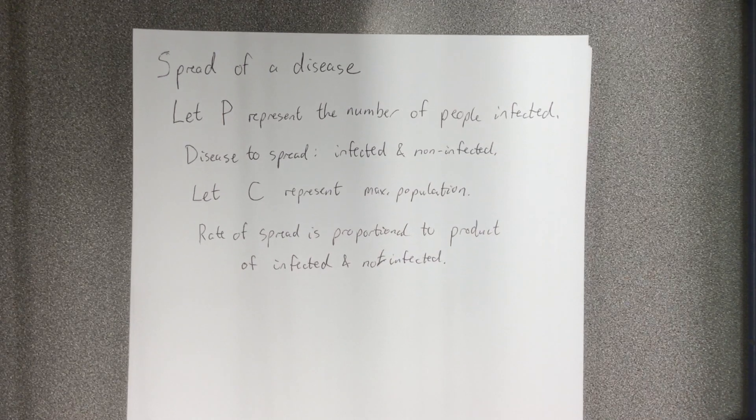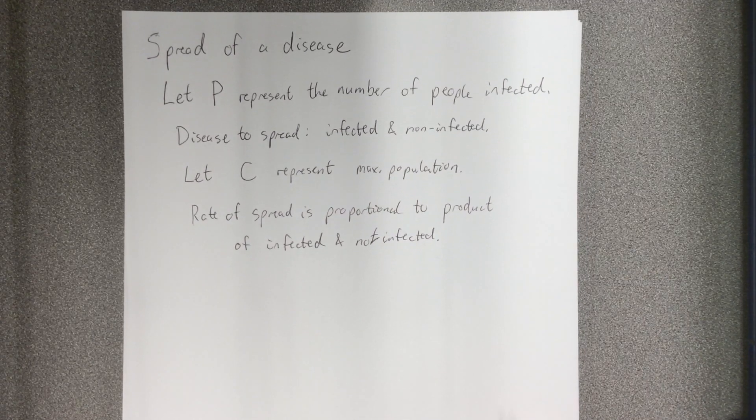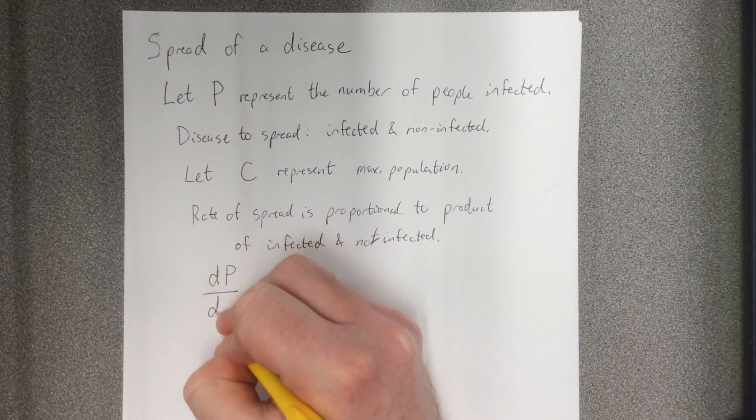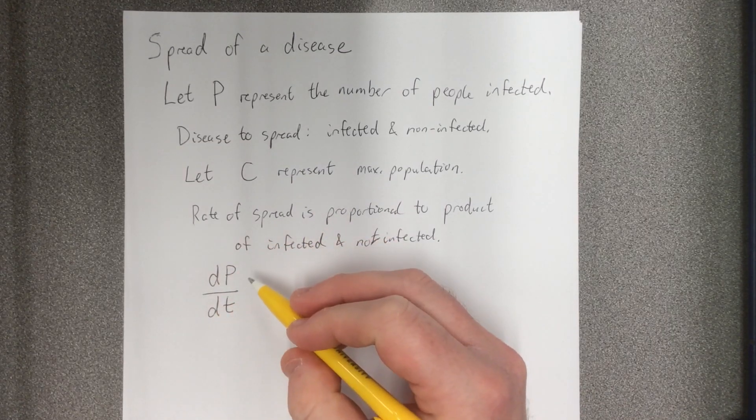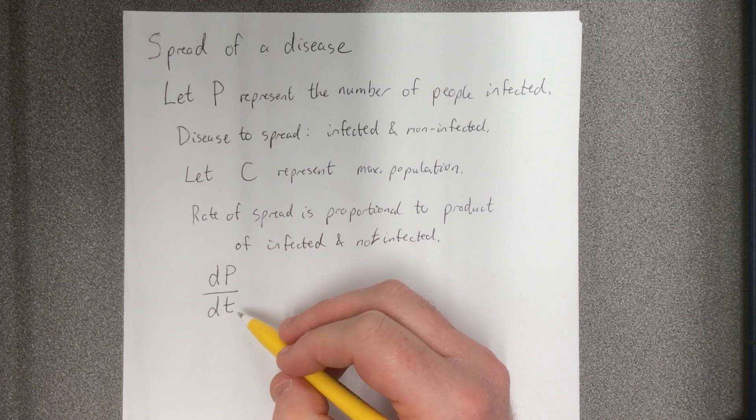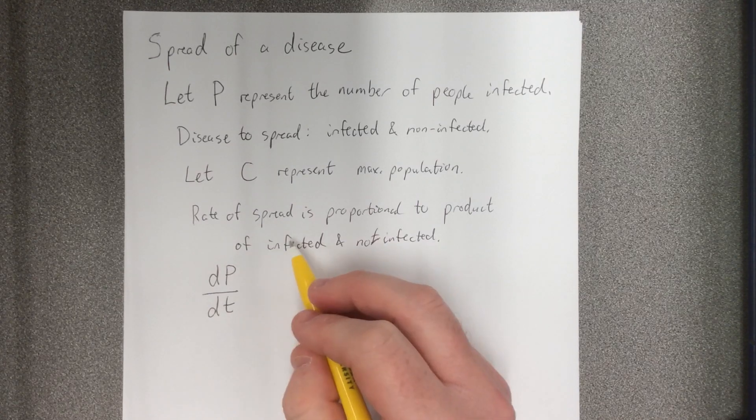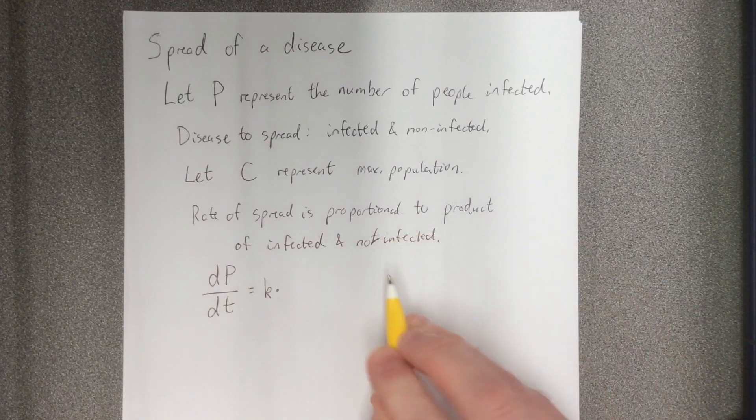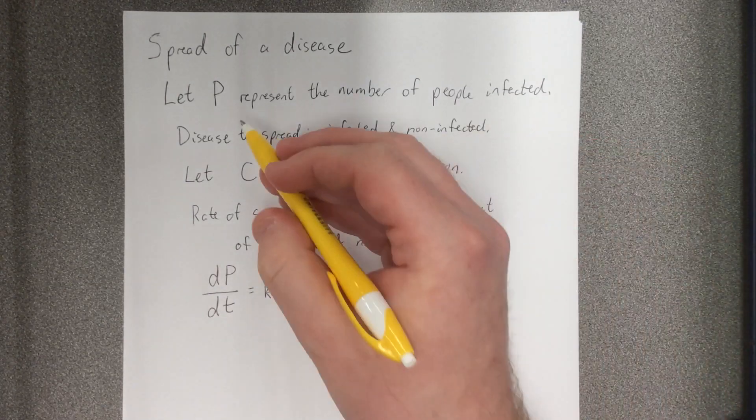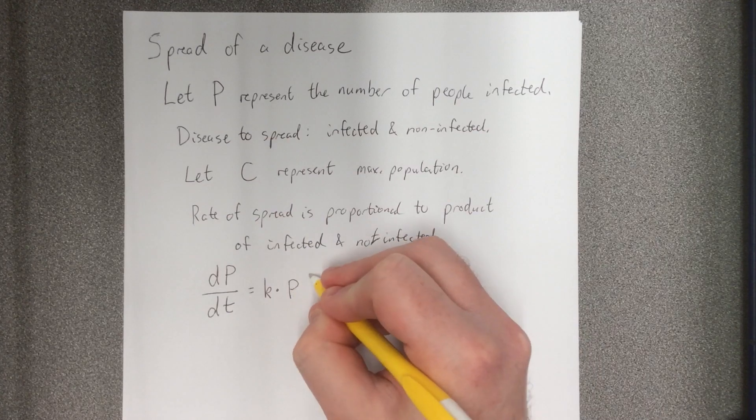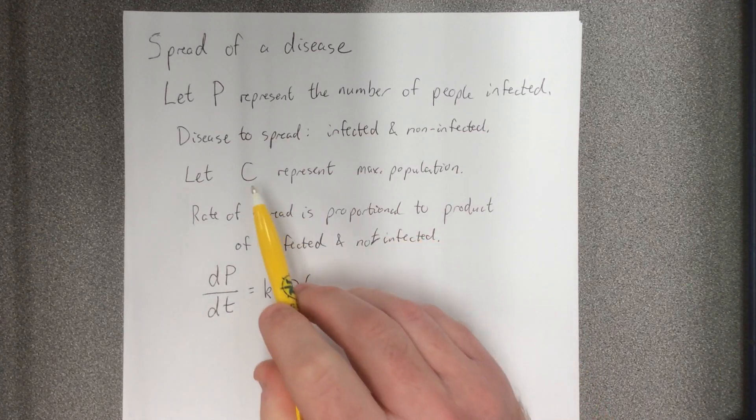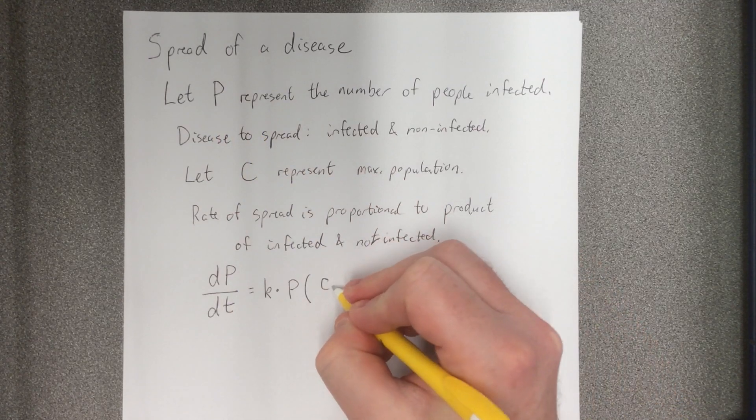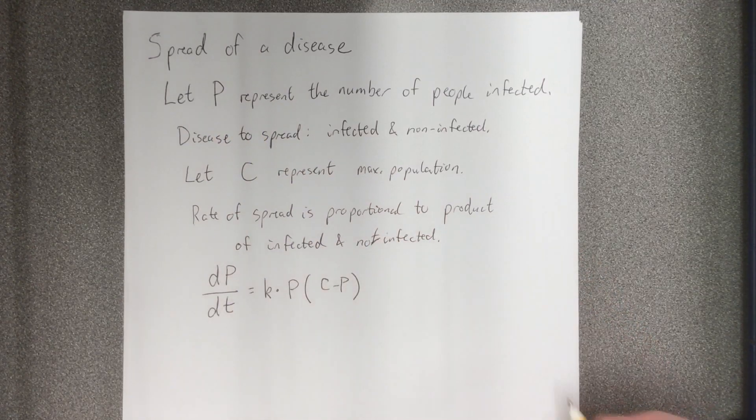Now I realize not everybody who watches this video is going to be up on calculus, but I did want to let you know that the derivative of P with respect to time would be the rate at which the disease is spreading. Is proportional to means that it will be a constant times the number of people infected, which we defined as the variable P, and the number of people that are not infected. If C represents everybody and P represents those that are infected, then C minus P represents those that are not infected.